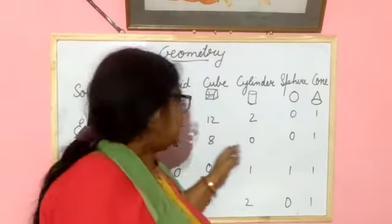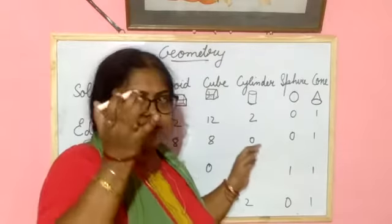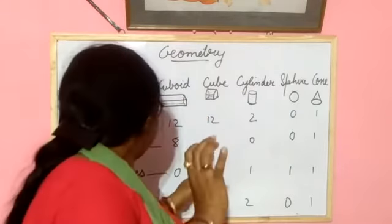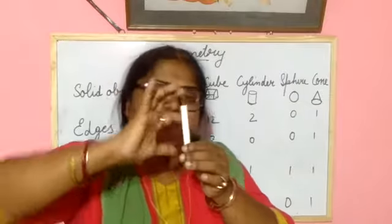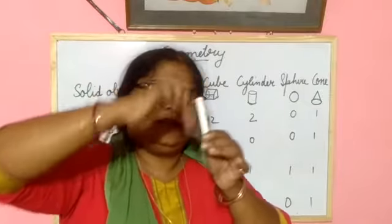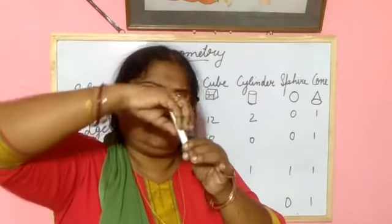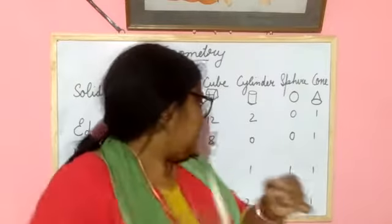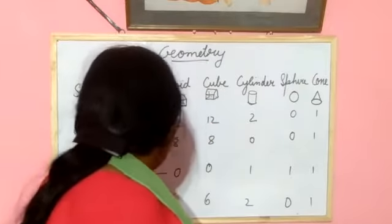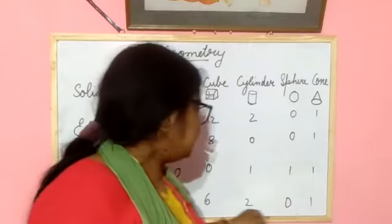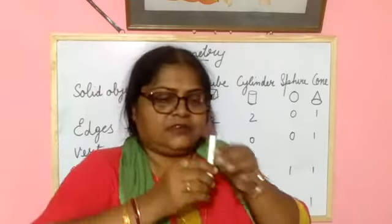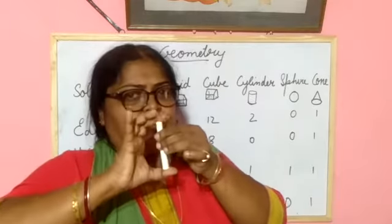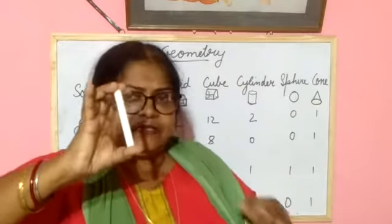In a cylinder, there is no vertex. How many curved faces? 1 curved face. And how many plain faces? 2 plain faces: 1 and 2.